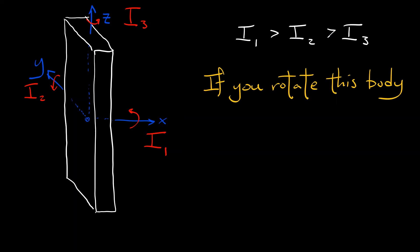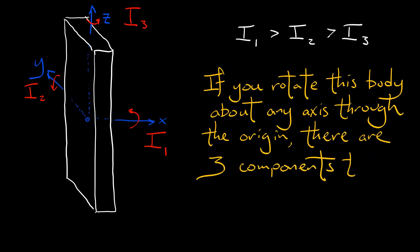I've got my solid body, which I could think of as a block if I wanted to. Now, if you rotate this about any axis through the origin, there are going to be three components to its angular momentum, m1, m2, and m3. And as it's spinning, these angular momenta are going to evolve over time, continuous time. How does that happen?